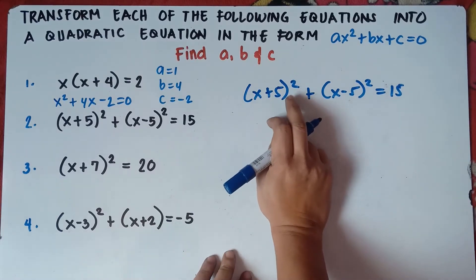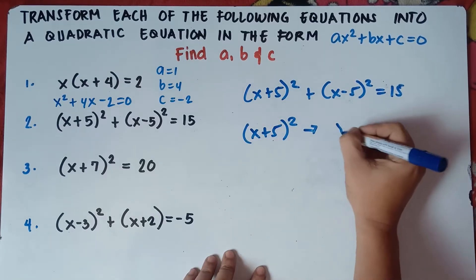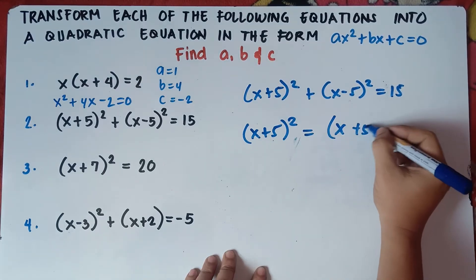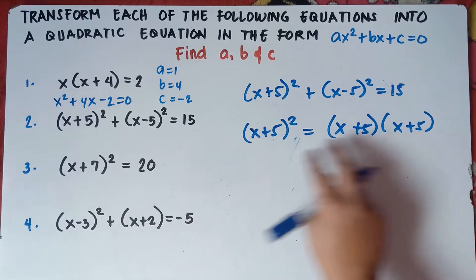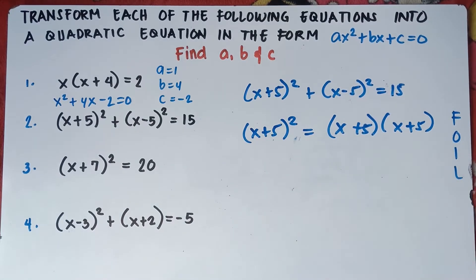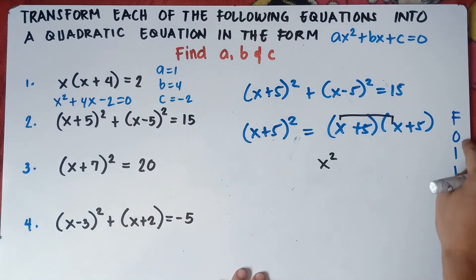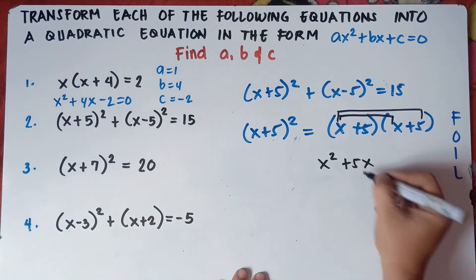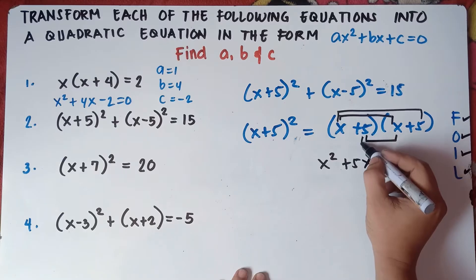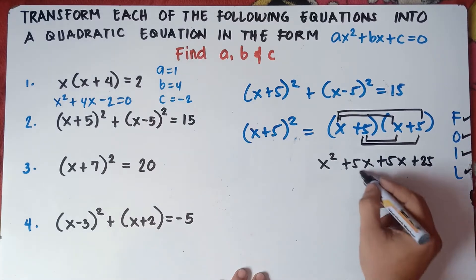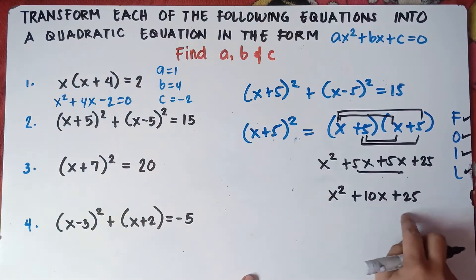So (x + 5)² means you multiply the binomial by itself twice: (x + 5)(x + 5). Using FOIL — First, Outer, Inner, Last — First: x times x = x². Outer: x times positive 5 = positive 5x. Inner: 5 times positive x = positive 5x. Last: 5 times positive 5 = positive 25. Combine like terms: x² + 10x + 25. That is the answer for (x + 5)² using the FOIL method.